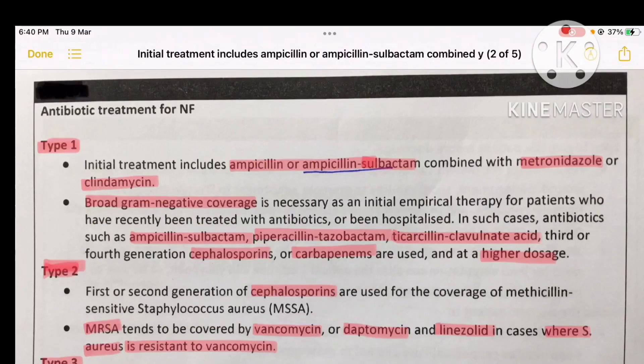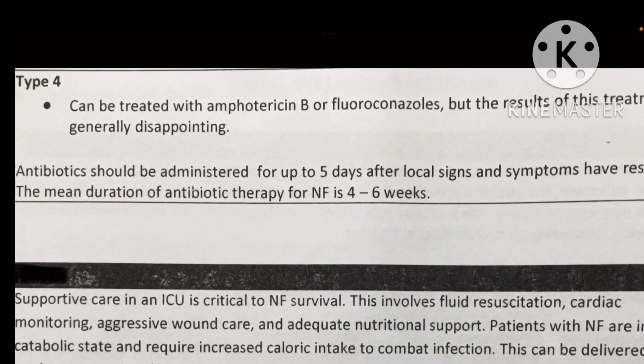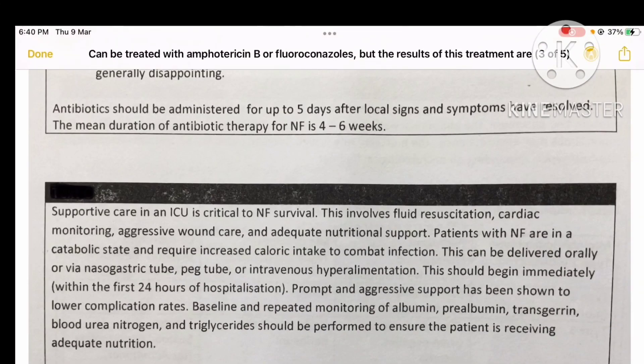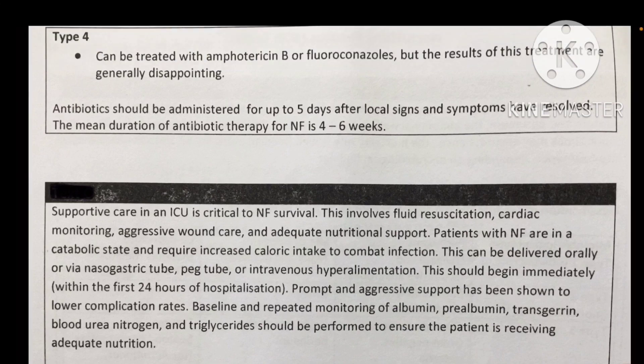For type 3, clindamycin and penicillin are used, with tetracyclines for Vibrio infection and third-generation cephalosporins. For type 4 necrotizing fasciitis, caused by Candida species — which are fungi — antifungal drugs are required. Amphotericin B or fluconazole are used, though the results of this treatment are generally disappointing.